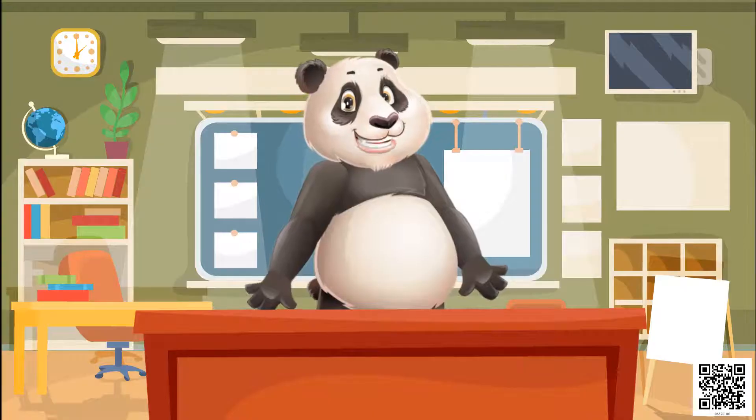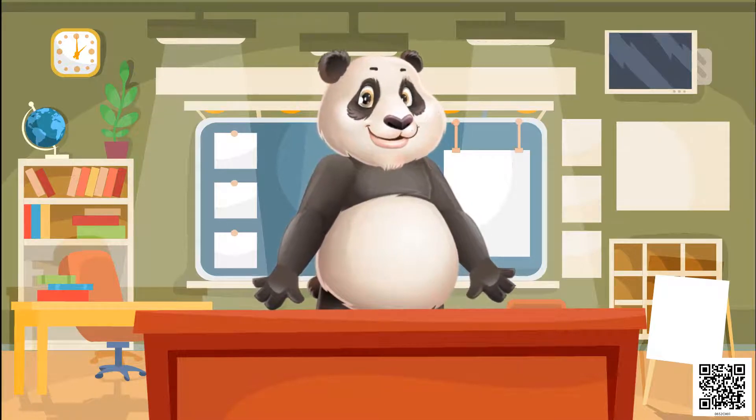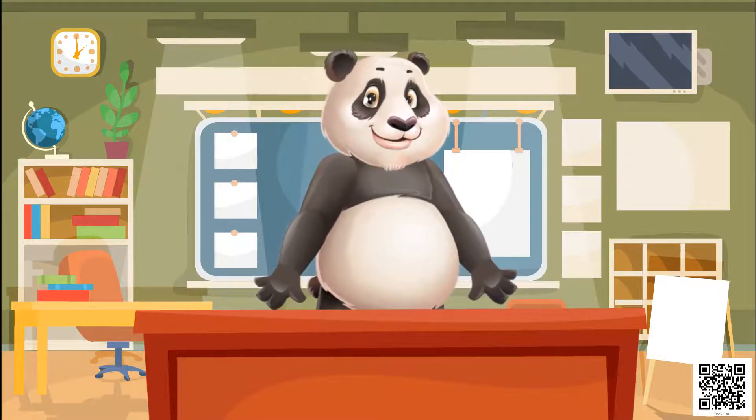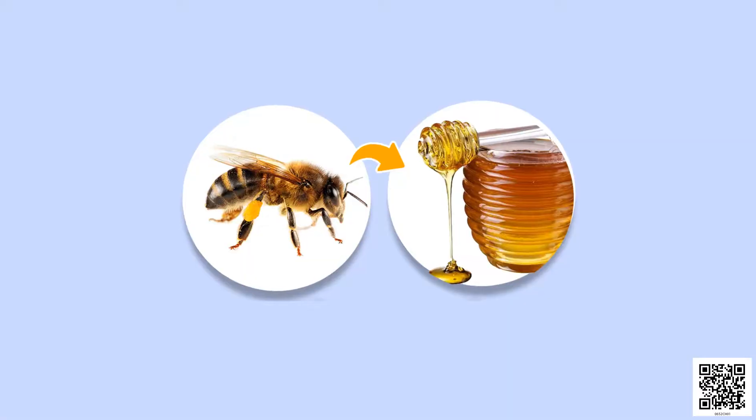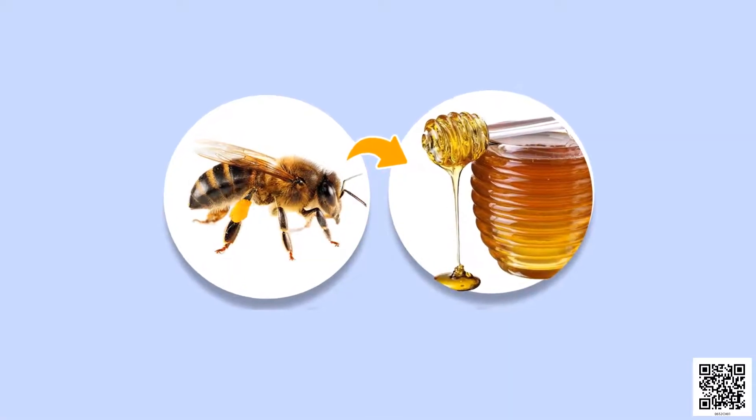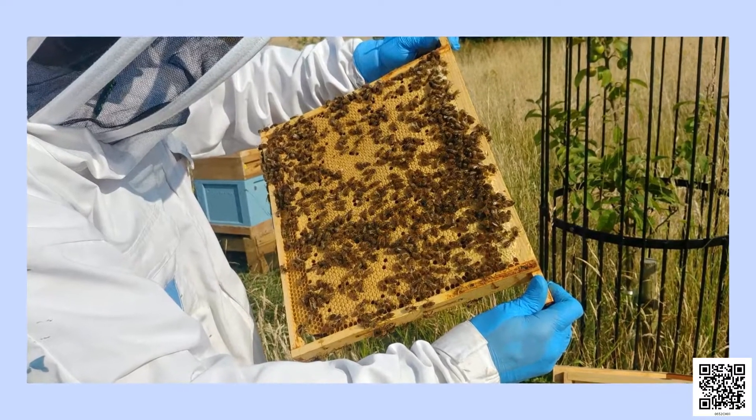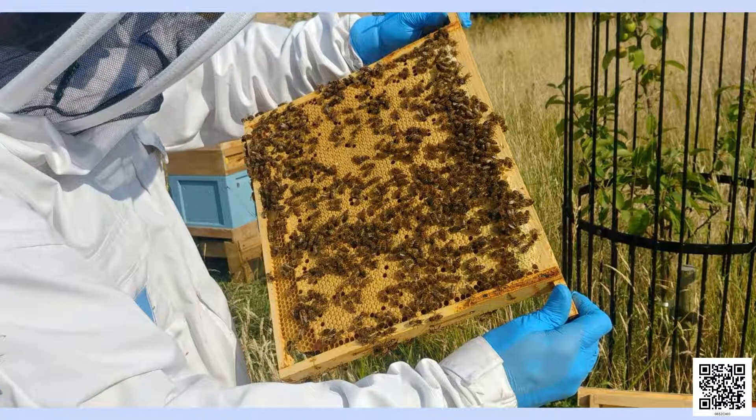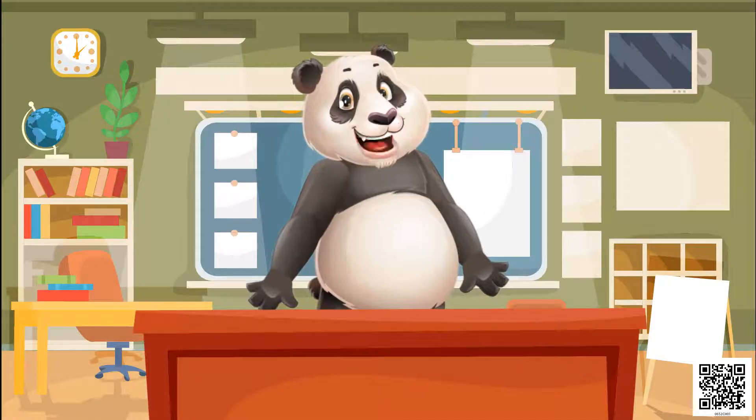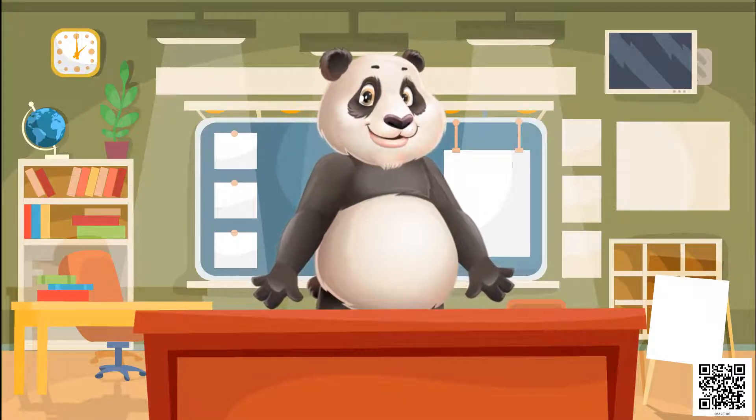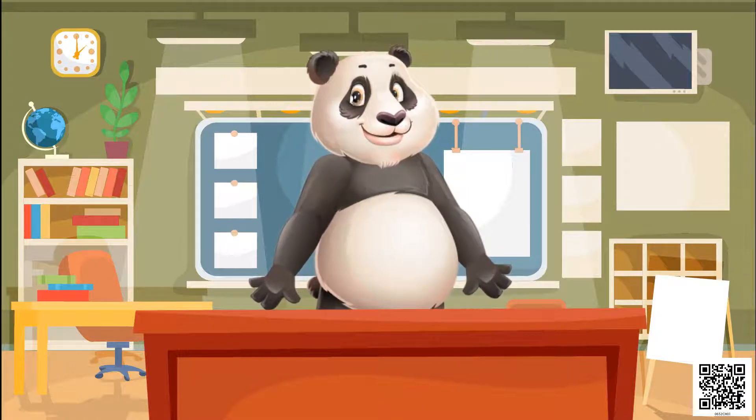Students, do you know where honey comes from or how it is produced? Yes, correct. Bees collect nectar from flowers, convert it into honey, and store it in their hive. We collect honey from these beehives. Now let's try to know what animals eat.